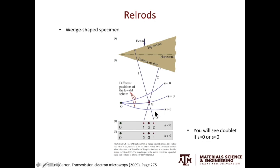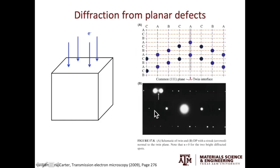Up to here, we've only discussed perfect crystals. What if we have other features in the TEM specimen? Let's start by looking at planar defects, using a stacking fault as an example.